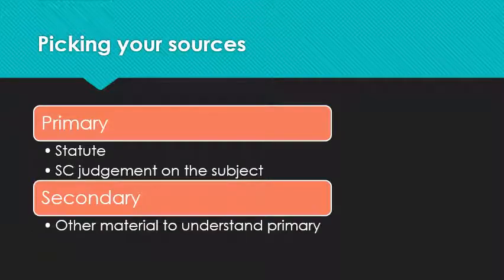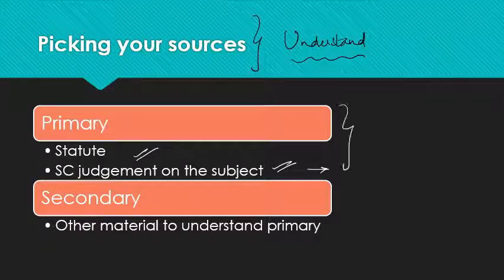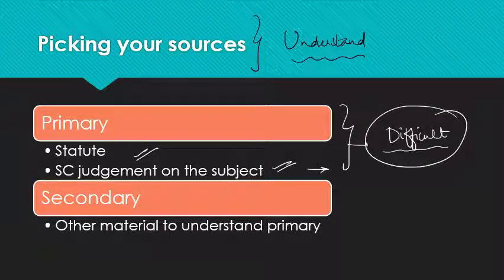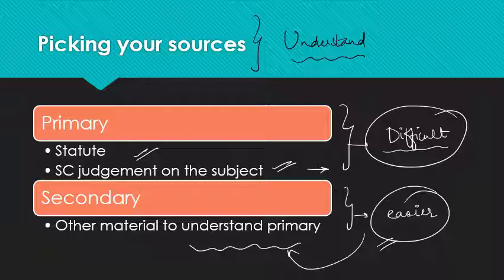To summarize how to pick your sources: as far as primary sources are concerned, go for statutes and the Supreme Court judgment on the subject — the most authoritative. However, these are quite difficult to understand; they are a little technical. Secondary material is relatively easier to understand, so it helps you comprehend the primary sources. Use secondary material in order to better understand the primary material.